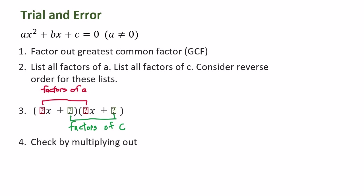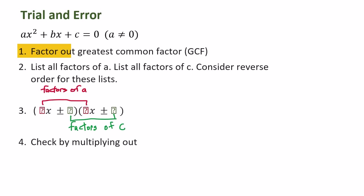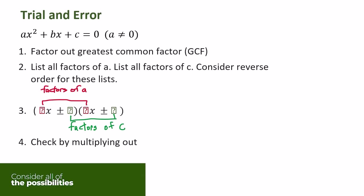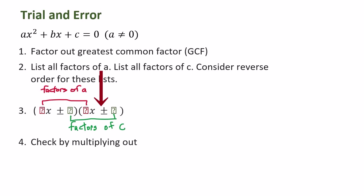Let's begin with the trial and error method of factoring the quadratic trinomial ax² + bx + c = 0, where a is not zero. The first step is to factor out the greatest common factor if there is one. Then list all the factors of a and all the factors of c. Consider the reverse order for these, then consider all the possibilities — something times x plus a factor of c, times something times x plus a factor of c — and check by multiplying out.